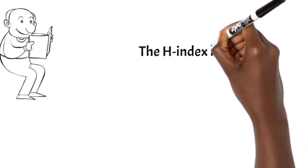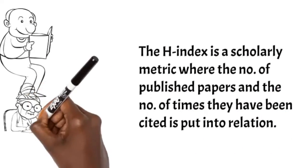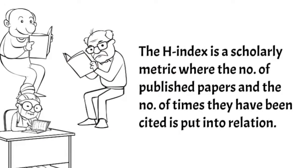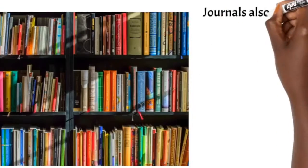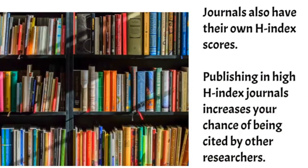The H-Index is a scholarly metric where the number of published papers and the number of times they have been cited is put into relation. That's how it started off, but over time journals also have their own H-Index scores. So publishing in high H-Index journals increases your chance of being cited by other researchers.